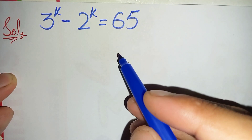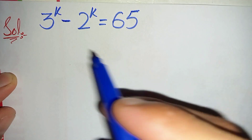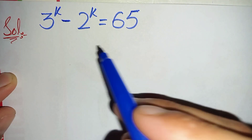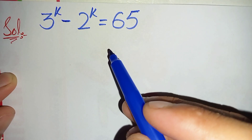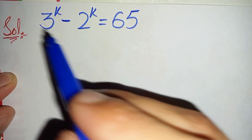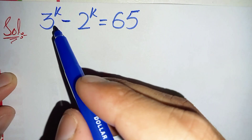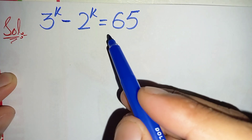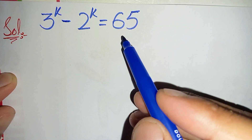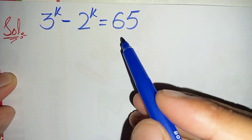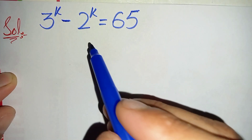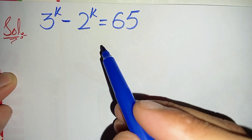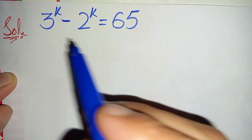Hi everyone, you are welcome. How to solve this nice exponential equation which is 3 raised to power k minus 2 raised to power k is equal to 65. How can we solve this equation?